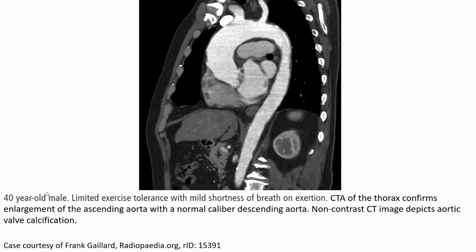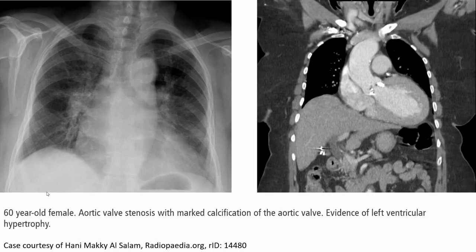This is the case of a 40-year-old male with limited exercise tolerance and mild shortness of breath. CTA of the aorta confirms dilatation of the ascending aorta with normal-caliber descending aorta. On non-contrast CT, there is aortic valve calcification. This is a case of a 60-year-old female with aortic valve stenosis showing mild calcification of the aortic valve and evidence of left ventricular hypertrophy, clearly seen on coronal chest CT.